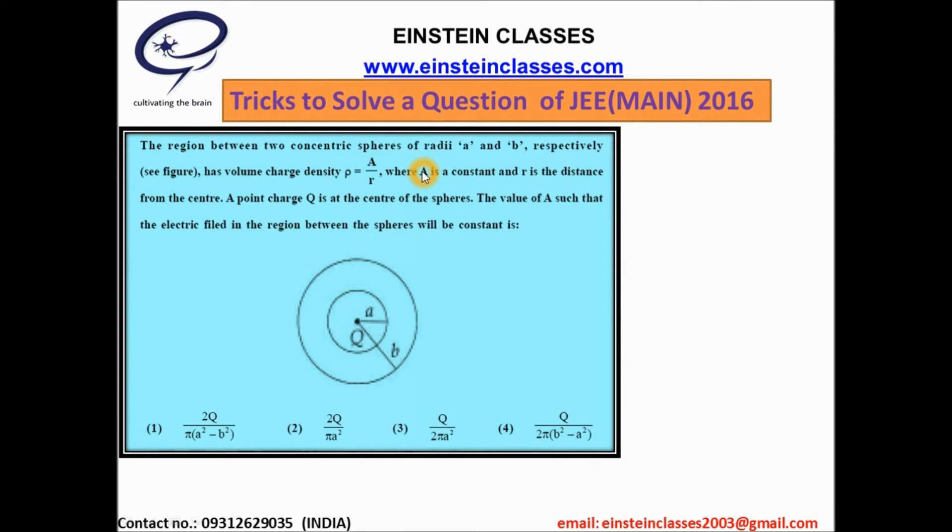Here a is a constant quantity and r is the distance which will be measured from the center of the concentric spheres. We have to find the value of a such that the magnitude of electric field in the space between a and b, in the space between the spheres, will be constant.